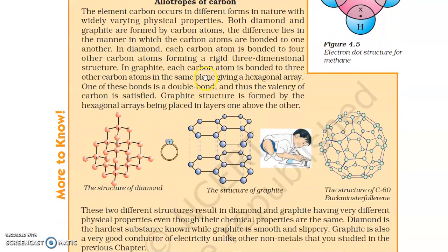In graphite, each carbon atom is bonded to three other carbon atoms in the same plane, giving a hexagonal array. Here you can see the hexagonal ring arrangement in graphite, and graphite is arranged in different layers.